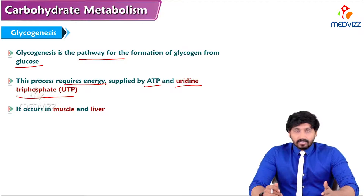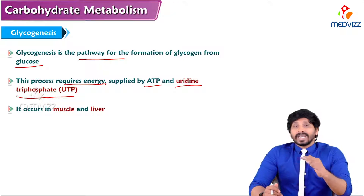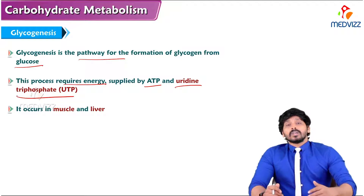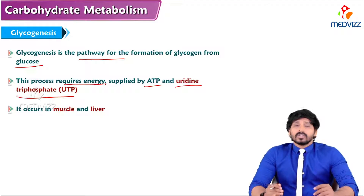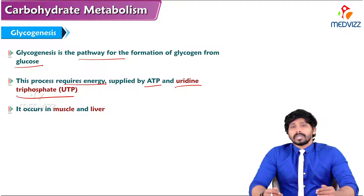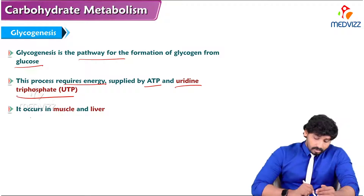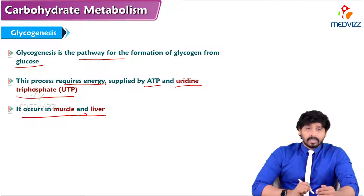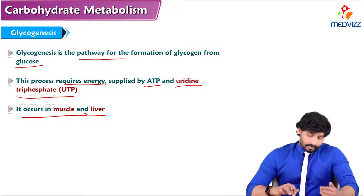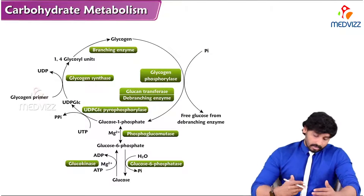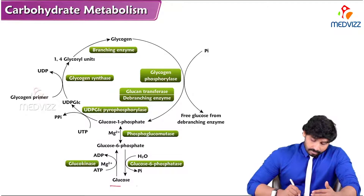UTP is a nucleotide useful in the synthesis of ribonucleic acid. It is a pyrimidine-type base called uridine, and when three phosphate groups are attached it becomes uridine triphosphate (UTP), which is used in glycogenesis. Glycogenesis occurs mainly in muscle and liver.